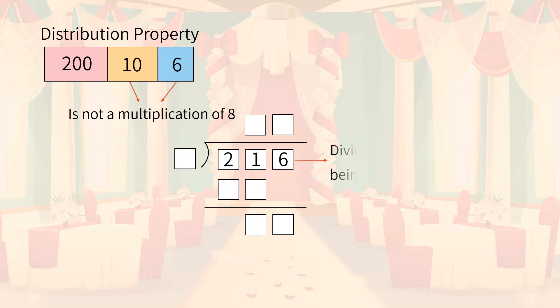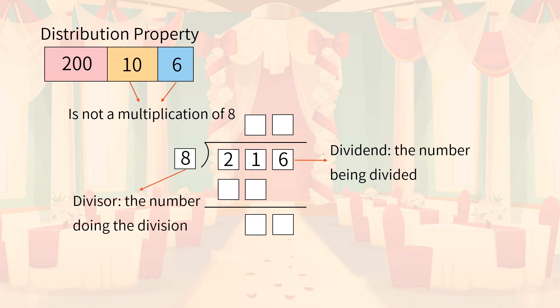and then place the number being divided, known as the dividend, to the right of the division symbol. Then, we place the number doing the division, or the divisor, to the left. We will write down the quotient on top. Now, let's do partial division from left to right.